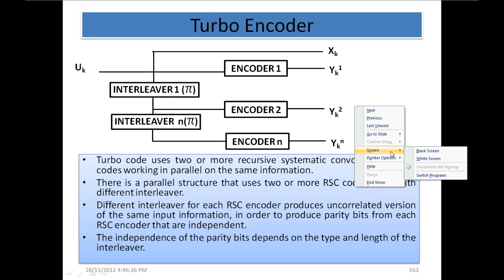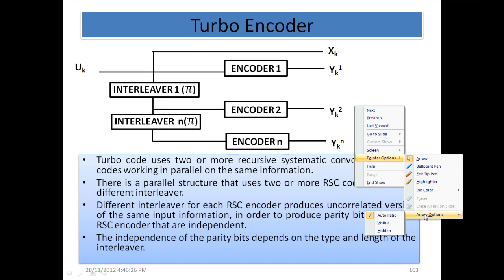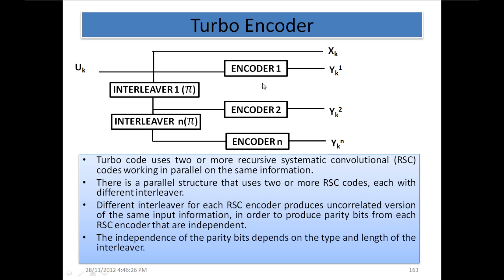This is a generic diagram of a turbo encoder. As you can see, we are adding convolutional encoders and they are added in parallel, along with an interleaver. Turbo code uses two or more recursive systematic convolutional codes, working in parallel on the same information. There is a parallel structure that uses two or more RSC codes, each with a different interleaver. So these interleavers are different from each other.